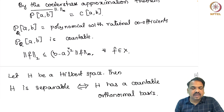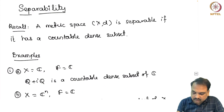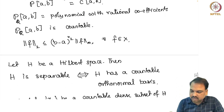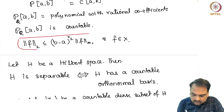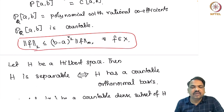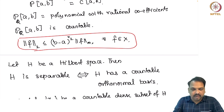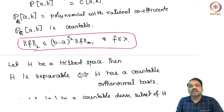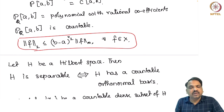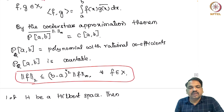We want to establish that C[a,b] with respect to the L2 norm is also separable. The relation between the L2 norm and supremum norm is: the L2 norm of F is less than or equal to the square root of (b minus a) multiplied by the supremum norm of F. So if we can approximate F by a sequence of polynomials in the supremum norm, we can do the same with respect to the L2 norm. Hence C[a,b] with the L2 inner product is also separable.